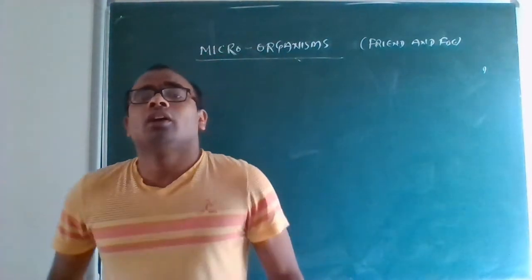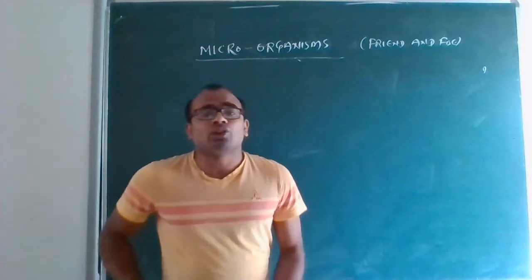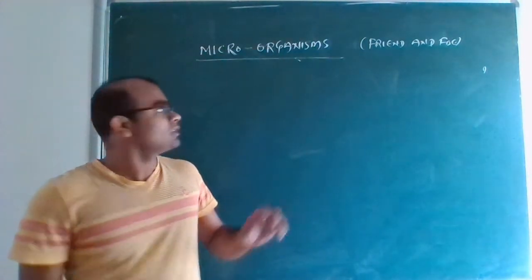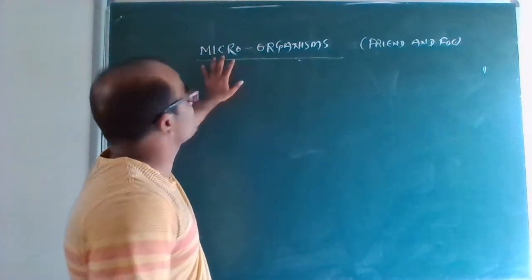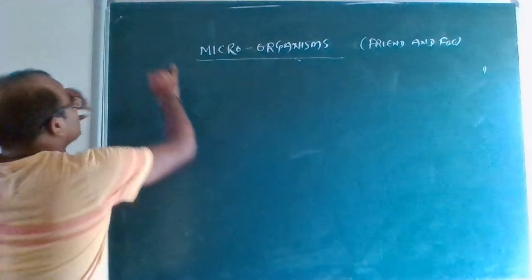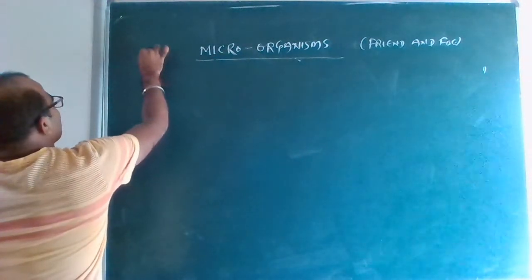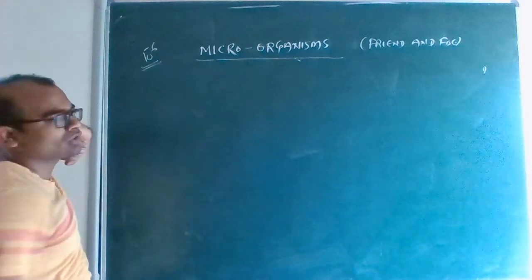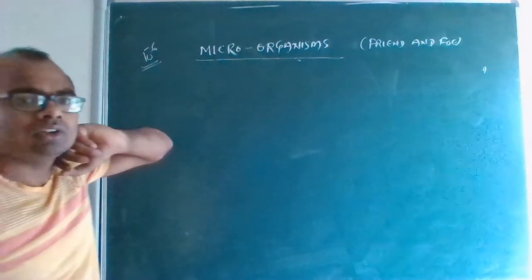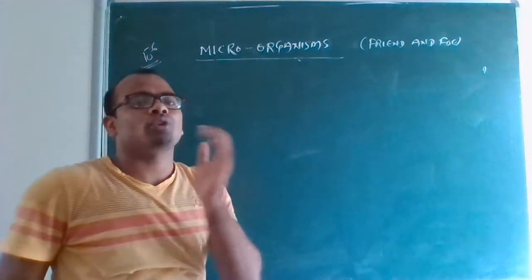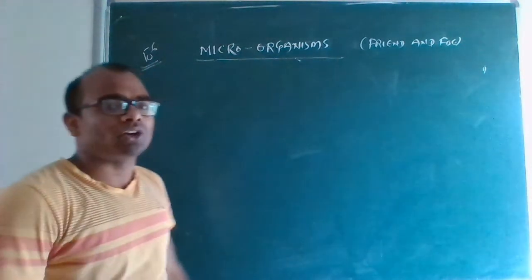So micro — what does micro mean? Very, very small. 10 to the power minus 6. That is micro. This is a physics concept — 10 to the power minus 6 is micro.